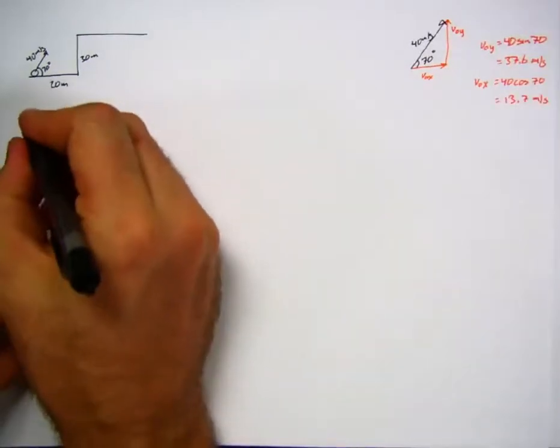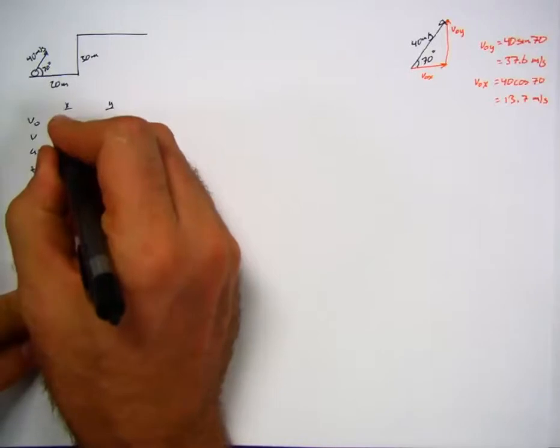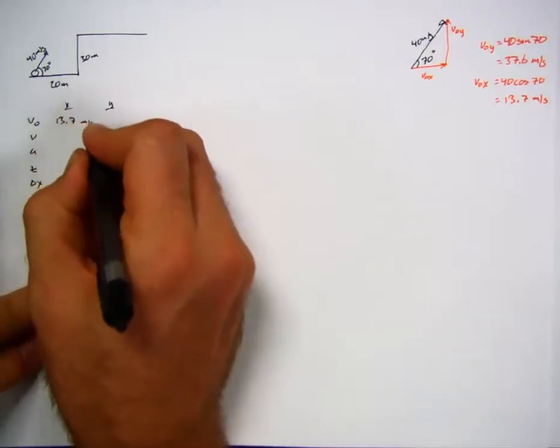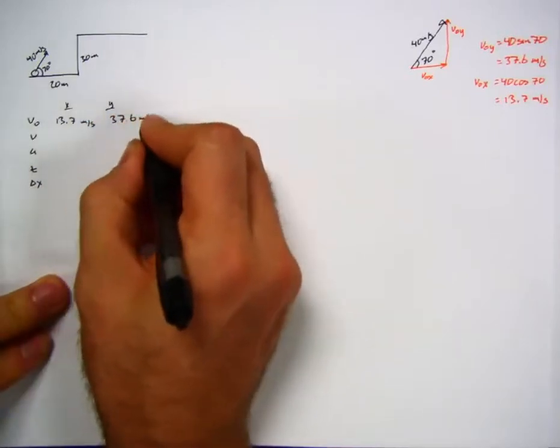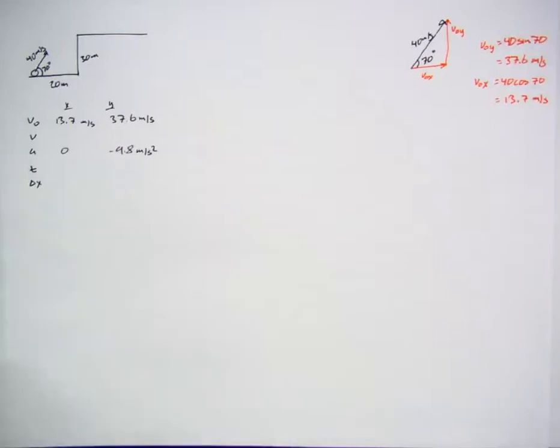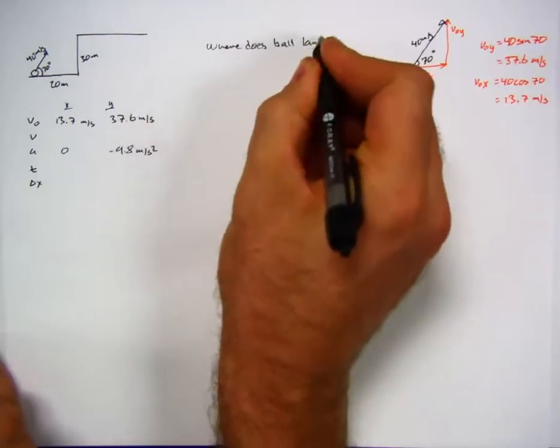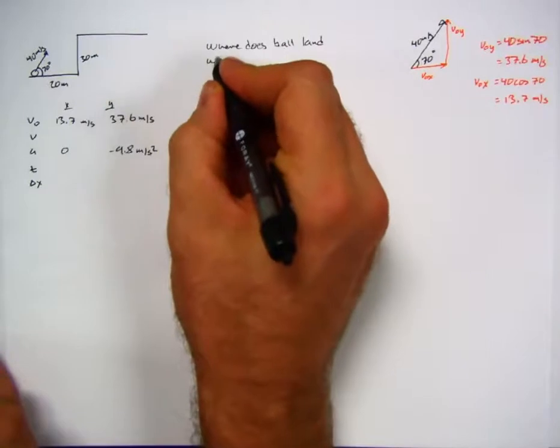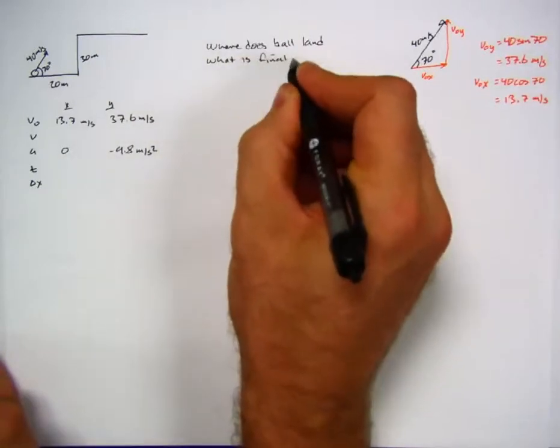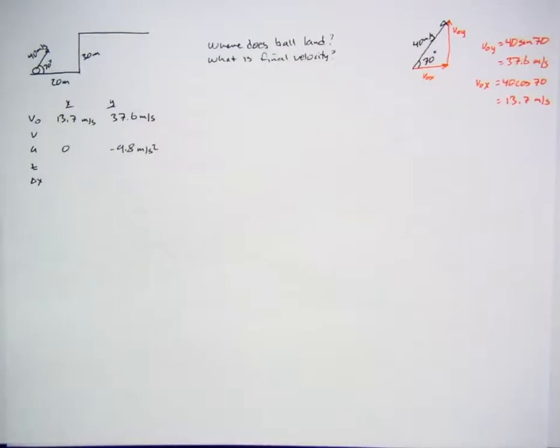Going back over here, v0, v, a, t, delta x, x and y. V0 in x is 13.7 meters per second, zero, negative 9.8. I just realized I don't even know what I'm asking yet. I just drew a picture and gave you some parameters and I just started going. What shall we look for here? Clearly we want to know where the ball lands, so let's just ask that question: where does the ball land? And because we haven't done it for a while, let's say what is final velocity?